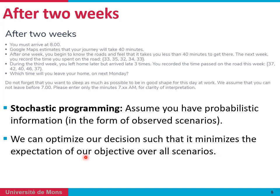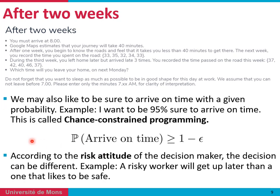With scenario-based programming, we typically minimize the expectation of our objective function. But some of you may have tried to be more risk-averse, taking a decision such that it allowed you to be on time 95% of the time. If you want to be sure to arrive on time 95% of the time, you impose a mathematical chance constraint such that the probability of arriving on time is greater than or equal to 95%.